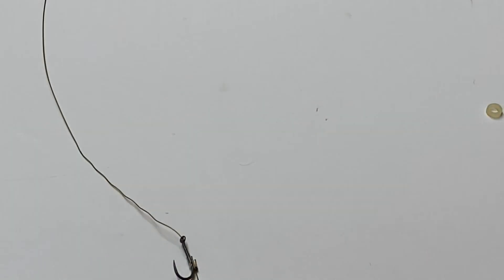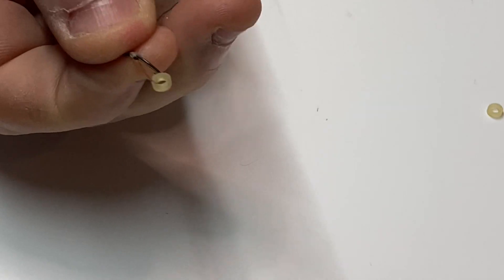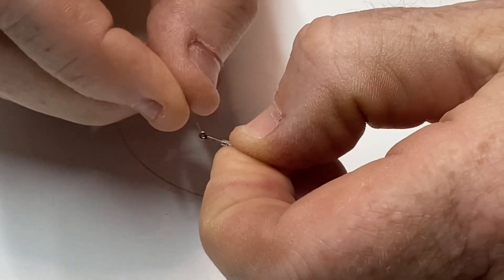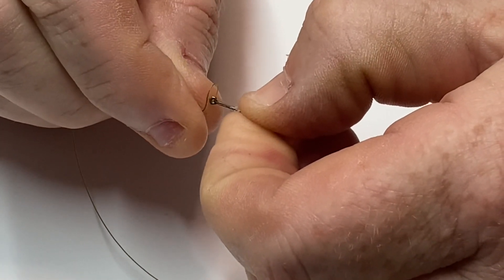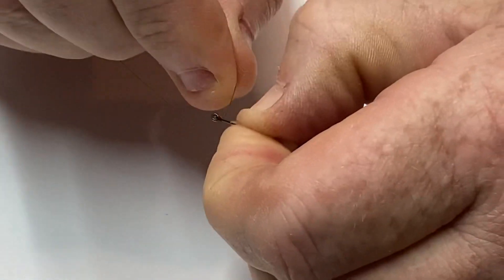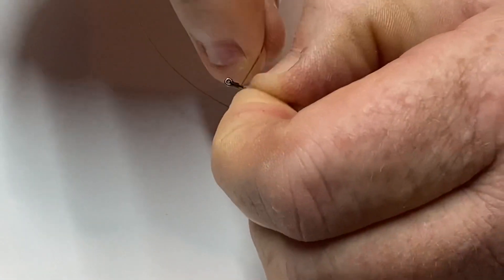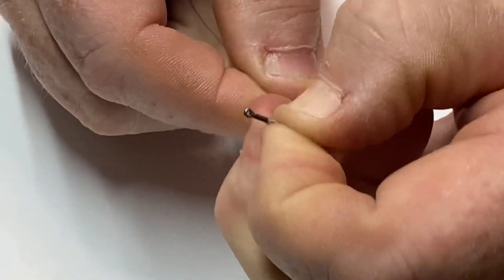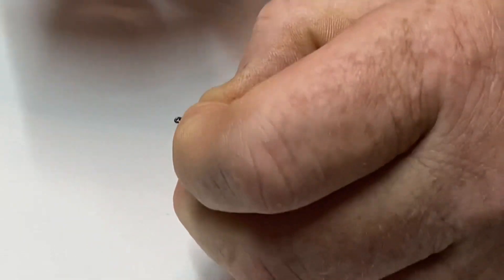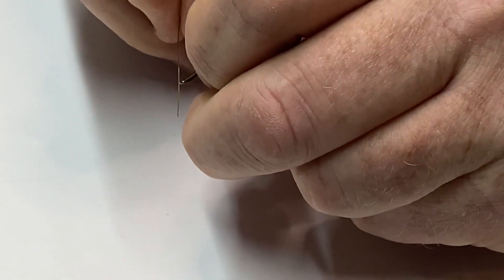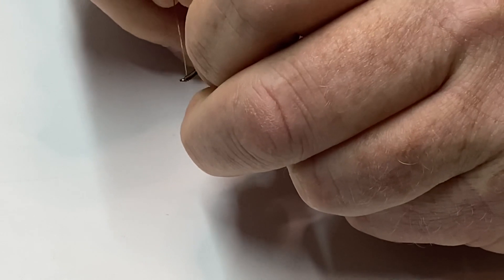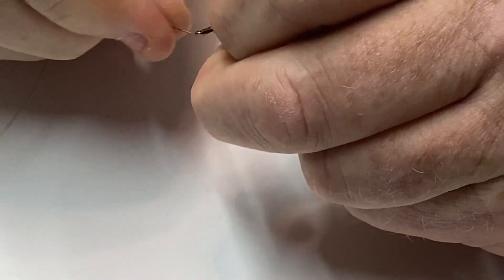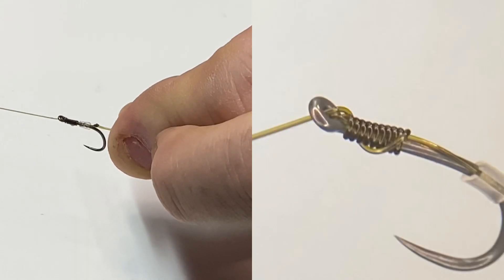Now the next stage is to create the knotless knot. Take the bend of the hook and hold it between the thumb and your forefinger. We have to wrap the line up the shank of the hook. Just create a little loop and get it going. One, two, three, four, five, six, seven, eight, nine, ten. Hold that line tight with the other fingers and go back through the back of the eye of the hook. Pull that tight, and that is a knotless knot.